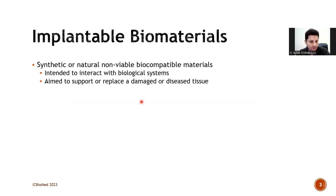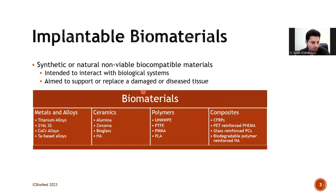First of all, what we call and define as biomaterials is any synthetic or natural material which is non-viable and has biocompatible features. Biomaterials are intended to interact with biological systems — in other words, tissues or organs such as vessels, bones, or blood. They also aim to support or replace a damaged or diseased tissue or organ. Biomaterials can be classified into four main groups: metals and alloys, ceramics, polymers, and composites. The most commonly used materials for each group are listed in the table shown here.